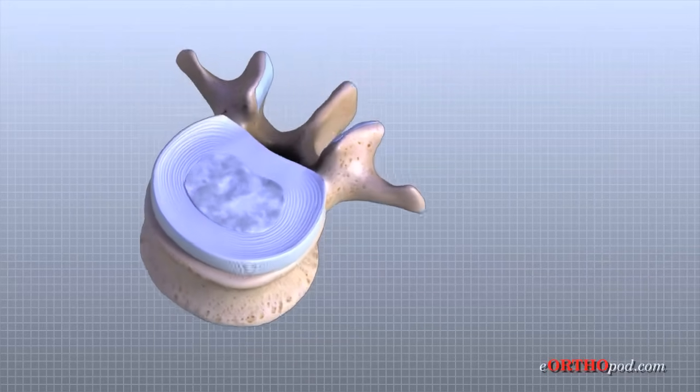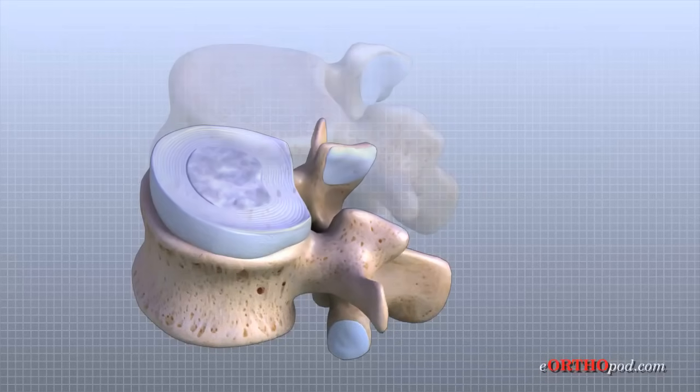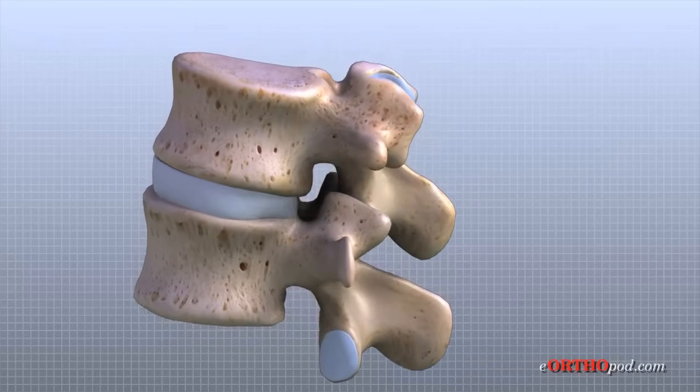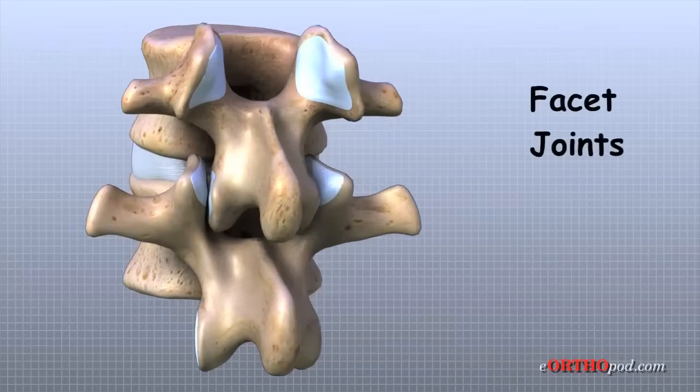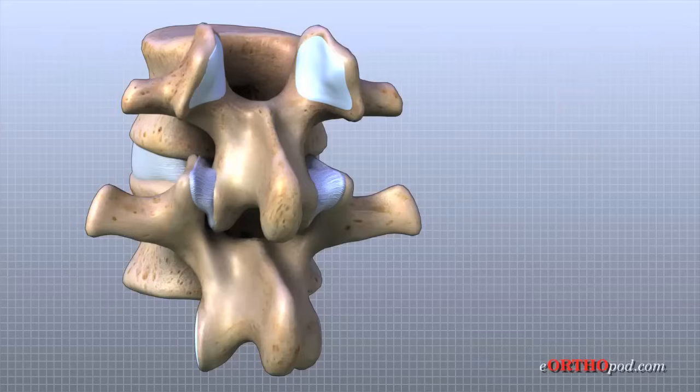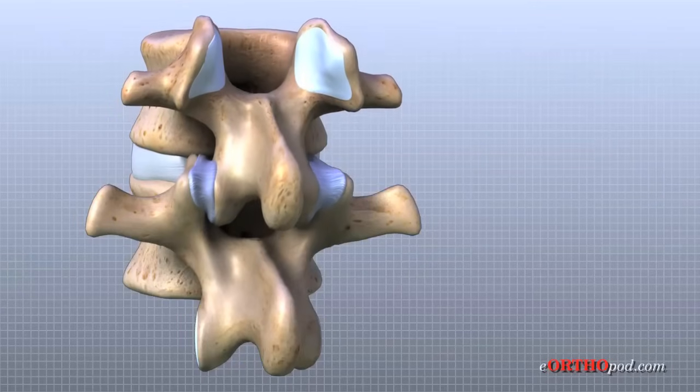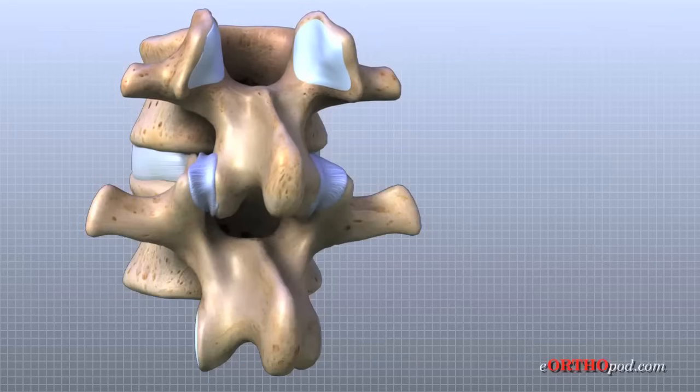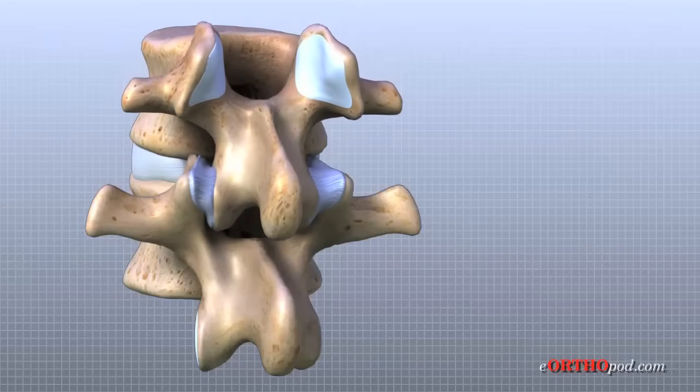Between the vertebra of each spinal segment are two facet joints. The facet joints are located on the back of the spinal column. There are two facet joints between each pair of vertebra, one on each side of the spine. A facet joint is a small bony knob that sticks out from the vertebral body at the back of the lumbar spine. Where these knobs meet, they form a synovial joint that connects the two vertebra. The facet joints of the lumbar spine move together in a sliding motion as you bend forward and backward.